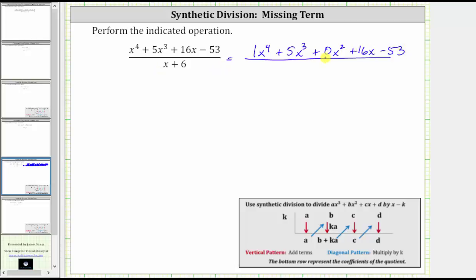We also need to change the form of the denominator or the divisor of x plus six. It needs to be in the form of x minus k. And we can write x plus six as x minus negative six, because subtracting a negative is equivalent to adding a positive.